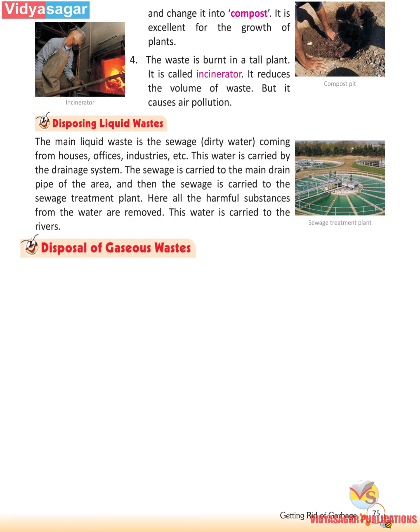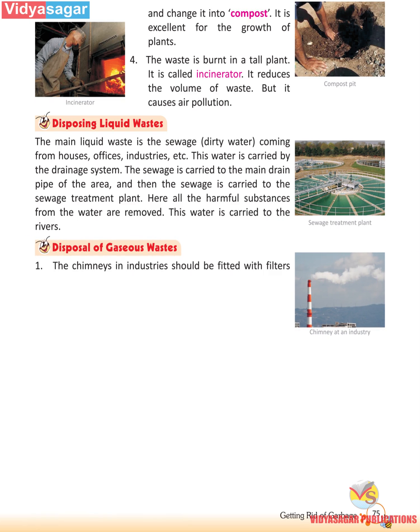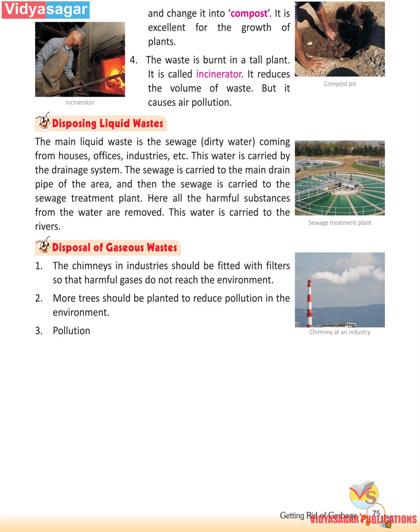Disposal of gaseous waste: The chimneys in industries should be fitted with filters so that harmful gases do not reach the environment. Second, more trees should be planted to reduce pollution in the environment. Third, pollution-free fuels should be used.